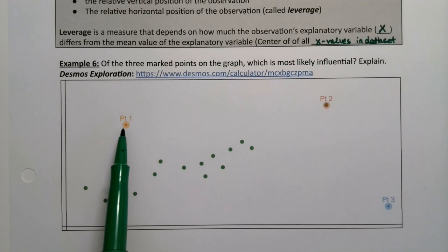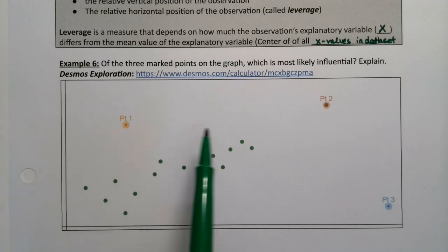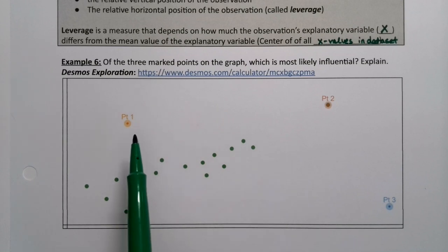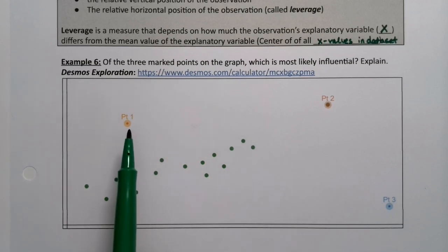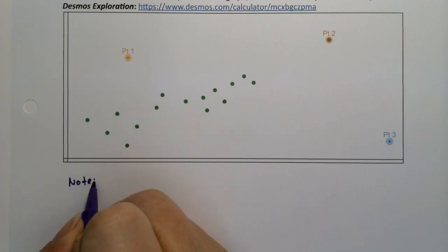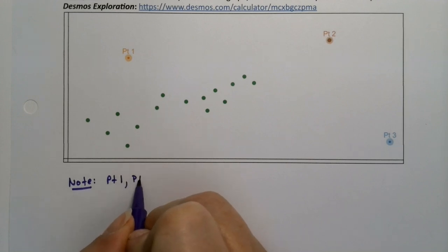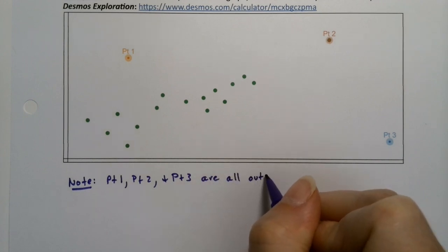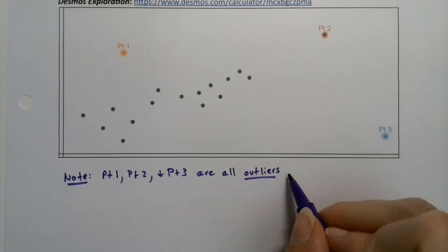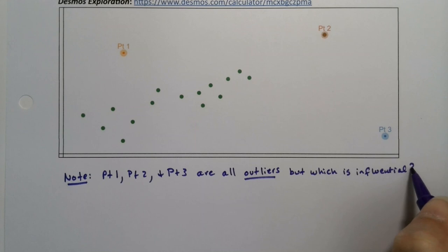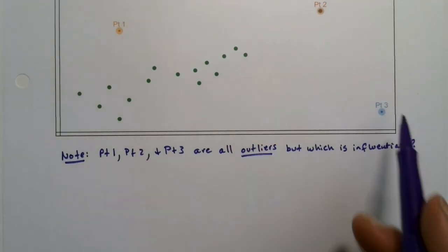Let's look at point number one. It has a different vertical position, but it's right in the thick of all the x values — right amongst all the other data points. All three of these points are outliers; that's not up for debate. The question is whether they are influential outliers — influential observations. Points one, two, and three are all outliers, but which one is influential? There is one that's influential, as we'll see.